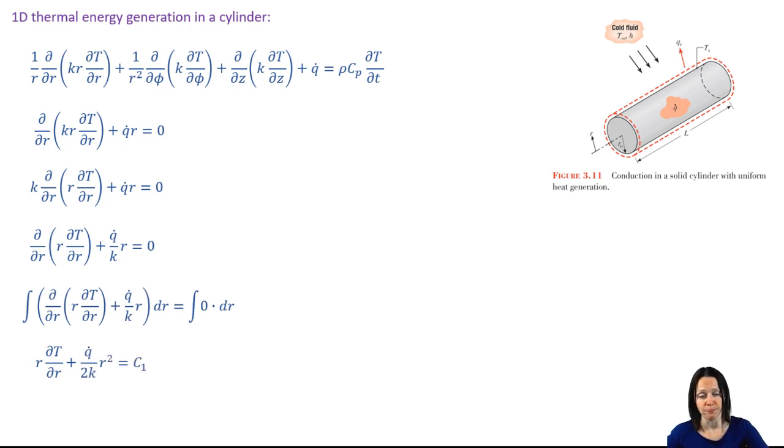C1 is our constant of integration. Then we divide through by r and multiply each side by dr and integrate. And now we have the general solution for T as a function of r.